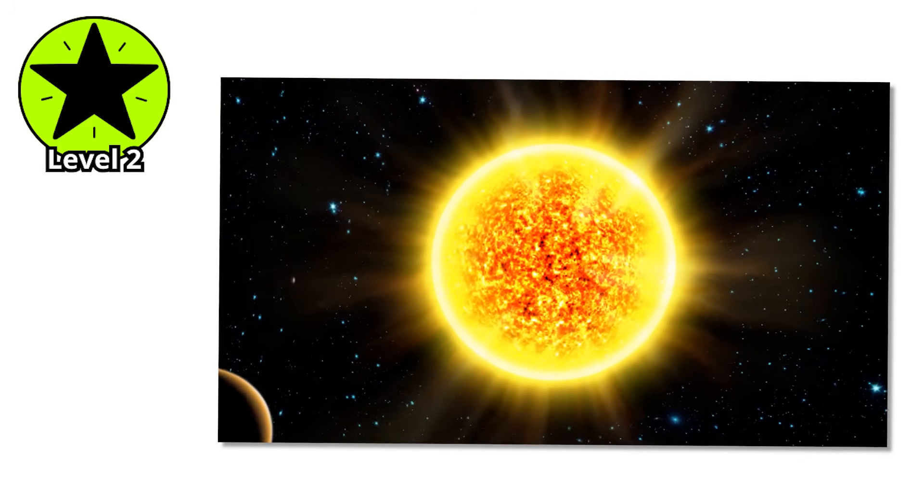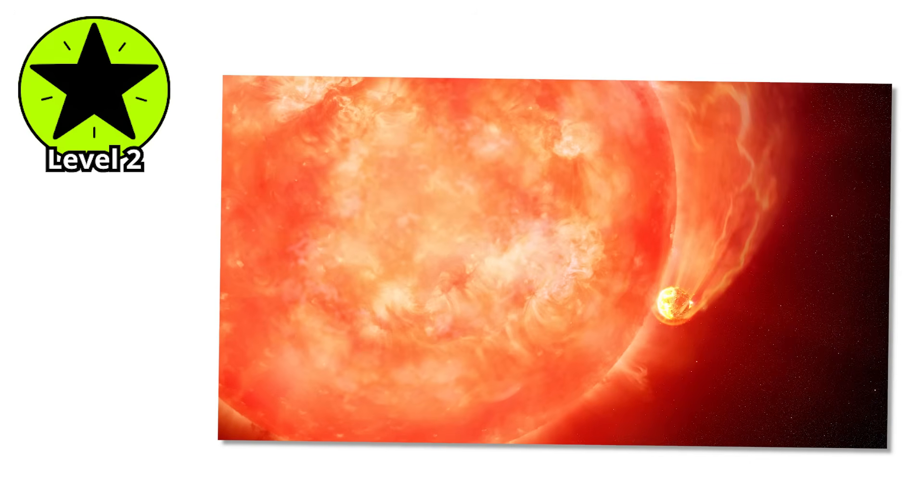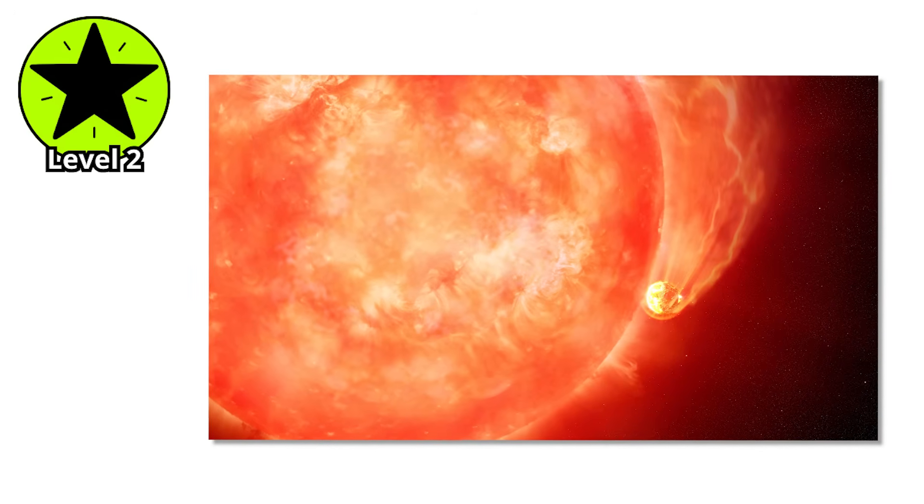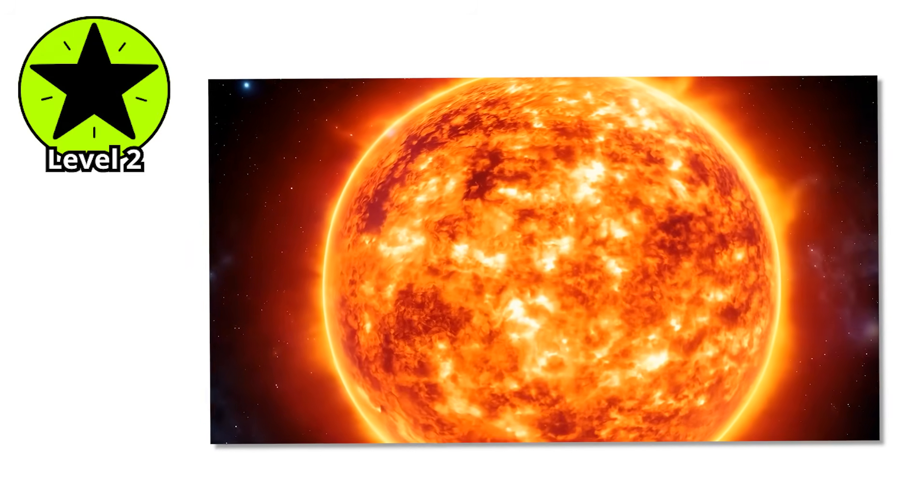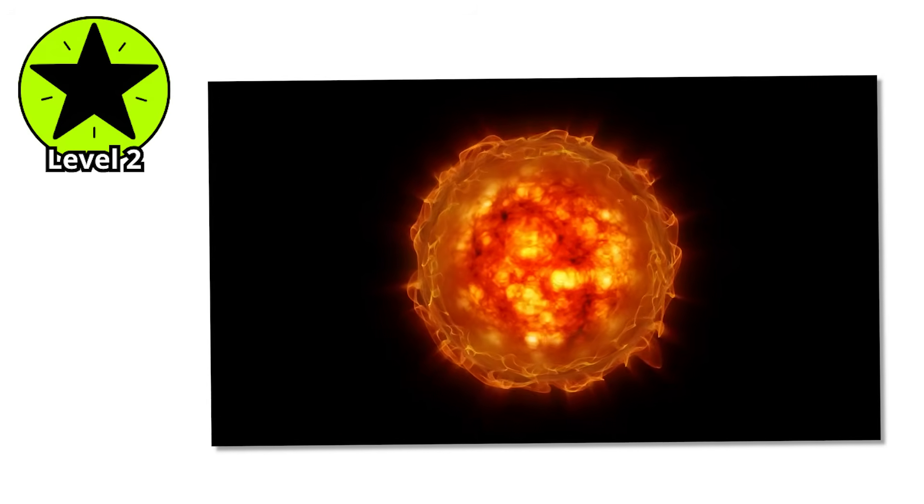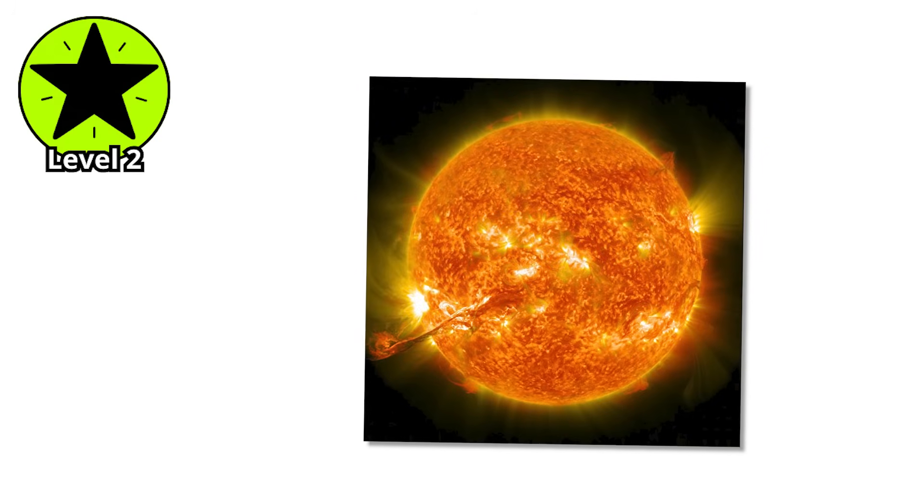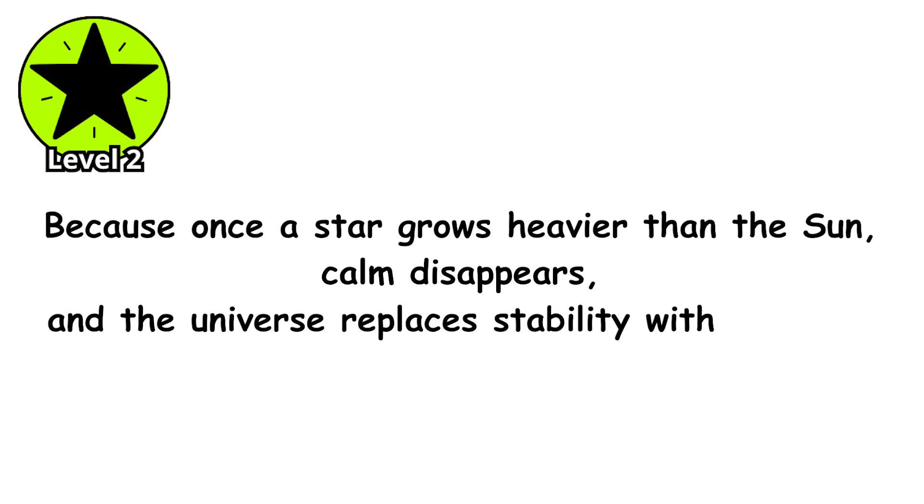But here's the uncomfortable truth. Our Sun is average. Boringly, beautifully average. The Sun contains 99.86% of all the mass in the solar system. Yet there are stars out there that could swallow the Sun whole and barely notice. This mediocrity is actually what makes our Sun special. It provides the long-term stability necessary for complex chemistry to evolve into biology, for single cells to become civilizations capable of contemplating their own cosmic insignificance. Because once a star grows heavier than the Sun, calm disappears, and the universe replaces stability with violence.